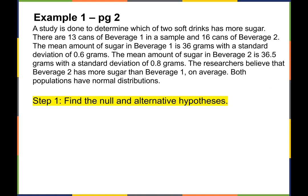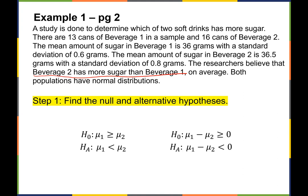Let's find the null and alternative hypotheses. The researchers believe that Beverage 2 has more sugar than Beverage 1, meaning Mu 1 is less than Mu 2. That must be the alternative hypothesis because it doesn't have an equal sign. So the alternative hypothesis is Mu 1 < Mu 2, and the null hypothesis is Mu 1 ≥ Mu 2. Thinking in terms of differences: the null is Mu 1 minus Mu 2 ≥ 0, and the alternative is Mu 1 minus Mu 2 < 0, meaning Mu 1 is smaller.